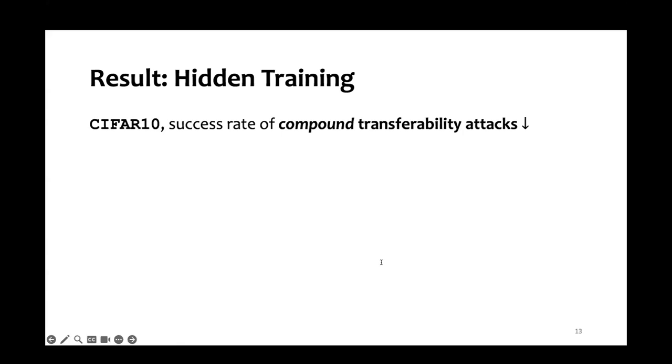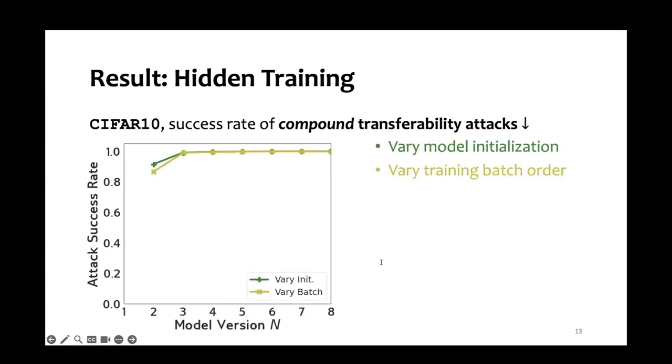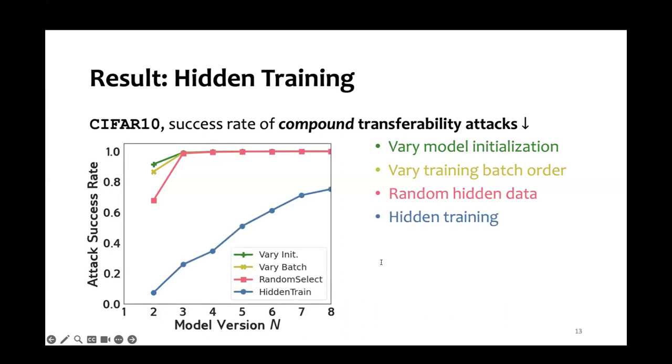Now let's look at the result of hidden training on CIFAR-10 dataset. On the y-axis, we have the attack success rate of compound transferability attacks. On the x-axis, we have the number of models in the sequence. We compare with baseline model versioning techniques, such as varying model initialization and varying the training batch order. As we can see, those techniques are not robust against compound transferability attacks. What about if we just randomly select hidden data? This is still not ideal because it's not robust. Let's look at hidden training. As we can see, hidden training brings a significant drop from those baseline model versioning techniques in terms of robustness against compound transferability attacks.